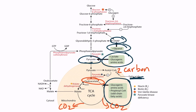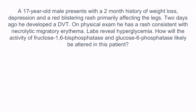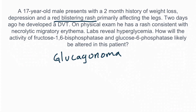With this background, let's apply this information with another question. A 17-year-old male presents with a two-month history of weight loss, depression, and a red blistering rash primarily affecting the legs. Two days ago, he developed a DVT. On physical exam, he has a rash consistent with necrolytic migratory erythema. Labs reveal hyperglycemia. How will the activity of fructose-1,6-bisphosphatase and glucose-6-phosphatase likely be altered in this patient? Hopefully you notice that this patient has a clinical presentation consistent with a glucagonoma — a pancreatic tumor that produces excess glucagon. Glucagonomas result in several symptoms remembered with the letter D: Dermatitis, Depression, Declining weight, Diabetes, and DVTs.